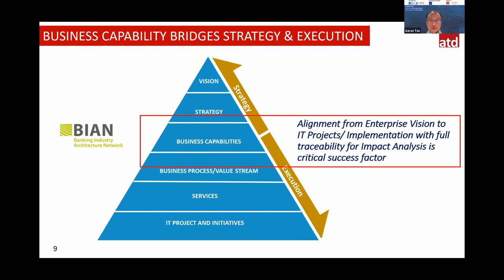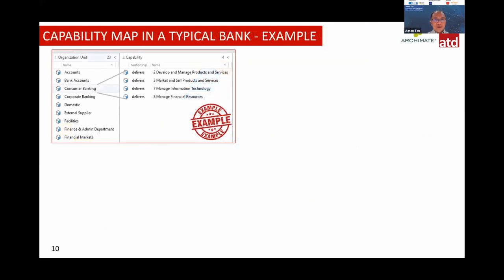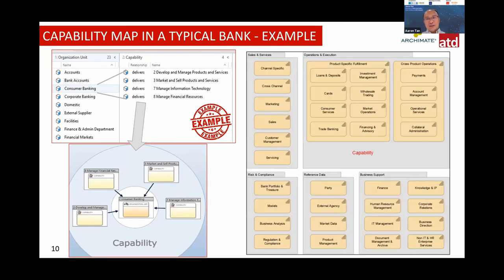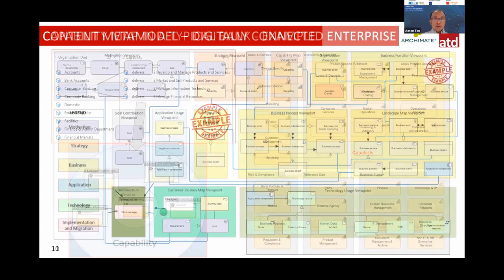Here is a sample capability map from a typical bank. The consumer banking department has four capabilities: develop and manage products and services, market and sell products, manage IDs, and manage financial resources. Consumer banking in the middle is supported by these four capabilities. This capability map is very important in terms of structure — it is not standalone but connected to strategy, application, infrastructure, data, and business.